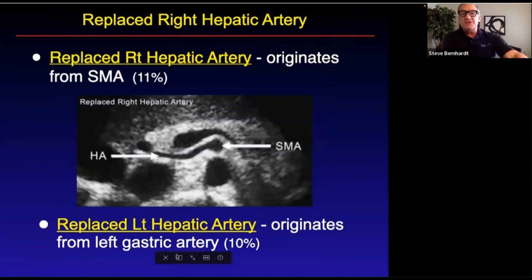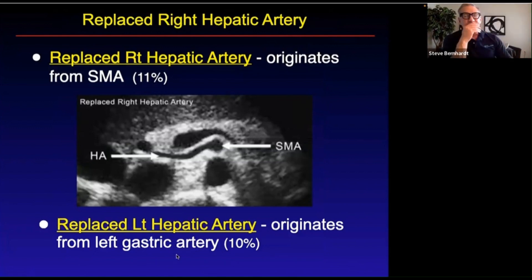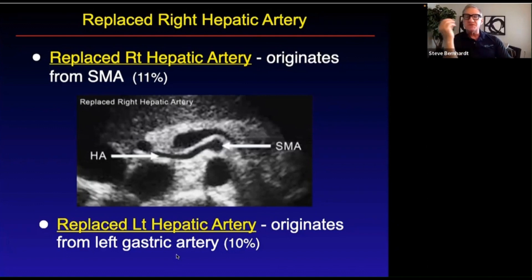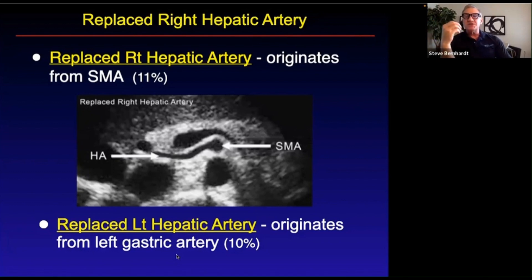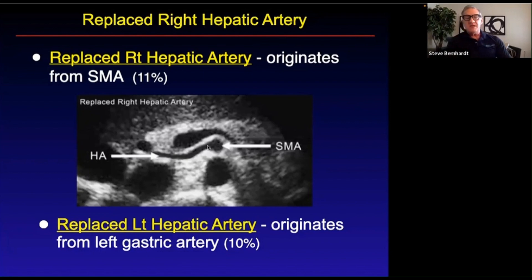Now, there are variations in anatomy here. You can have a replaced hepatic artery, which means it's not coming from its normal origin. The replaced right hepatic artery is the more common one, and it originates directly off the SMA. You can see an image of it here — there's the aorta, there is the SMA. I've usually seen this when scanning the head of the pancreas, because the replaced right hepatic artery goes under the pancreatic head.